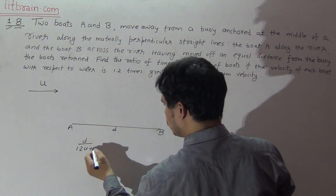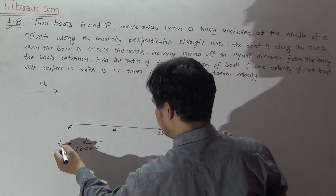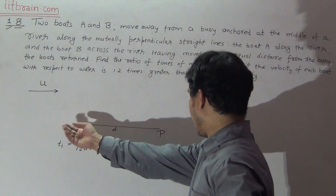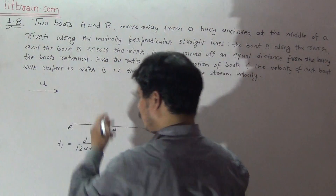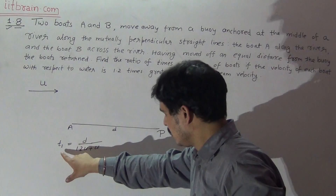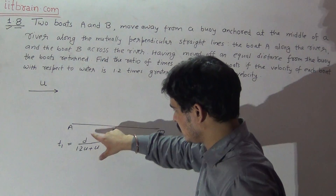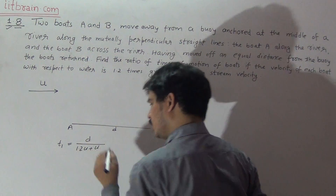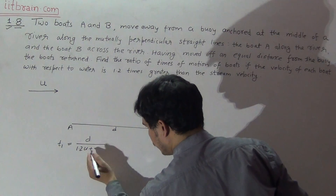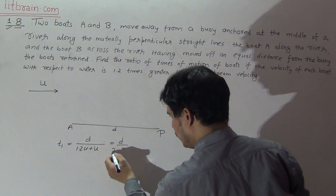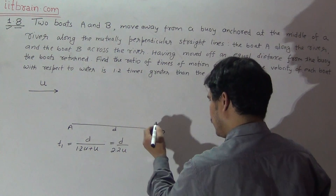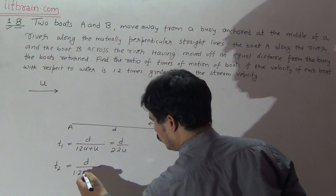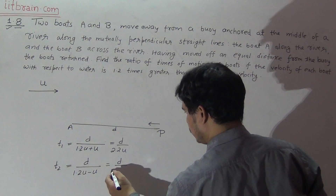In the direction of flow, time taken to travel distance D from A to P will be D over (1.2U + U), since both the boat and river move in the same direction. The total velocity is 1.2U + U = 2.2U, so time taken is D divided by 2.2U. For the return journey from P to A, time taken will be D over (1.2U − U), which is D over 0.2U.